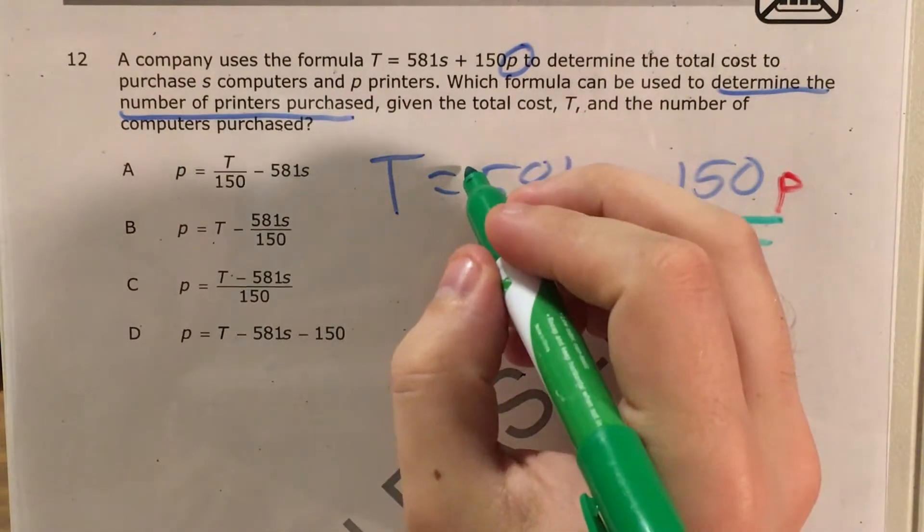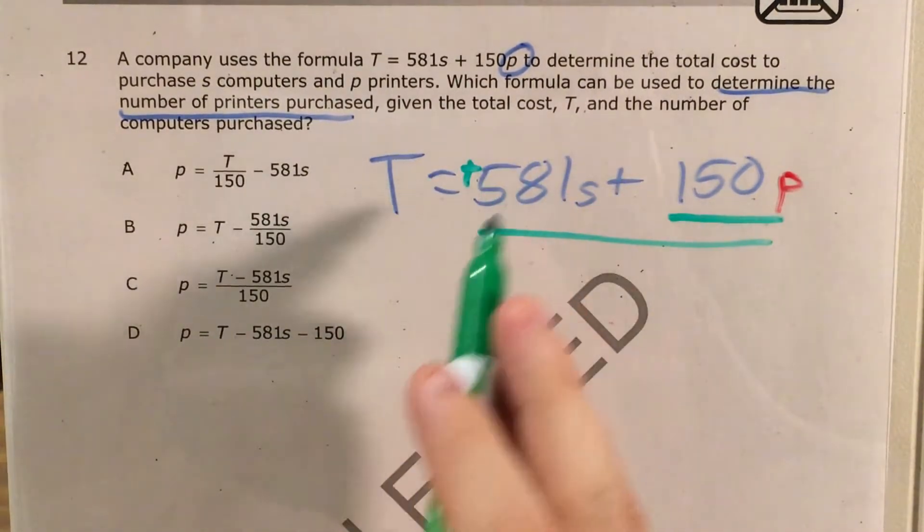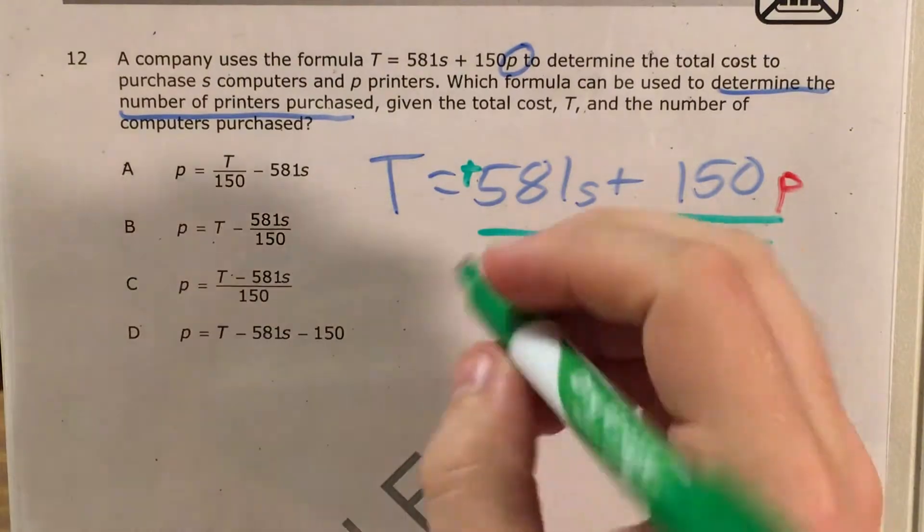Which means, if I see 581s, I'll put an imaginary plus sign in front of that and say, okay, I want to subtract.